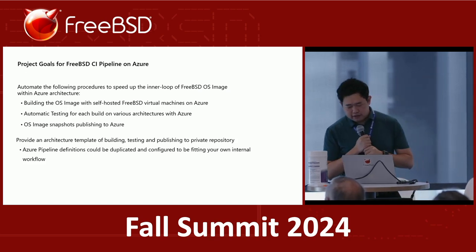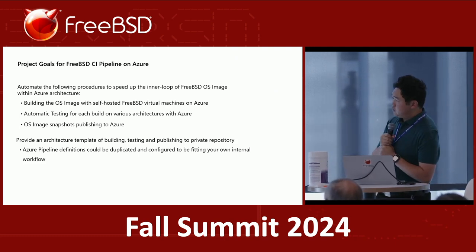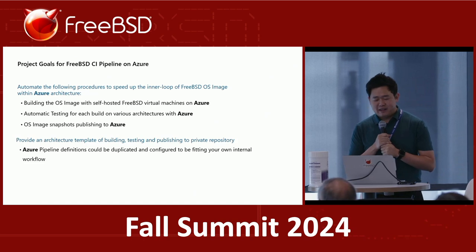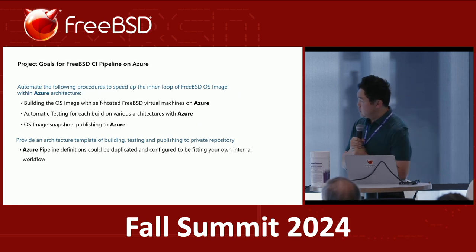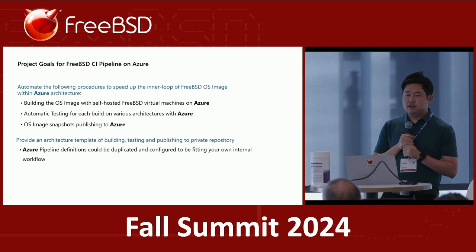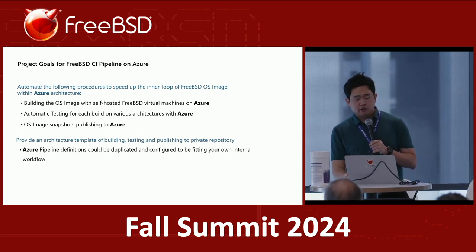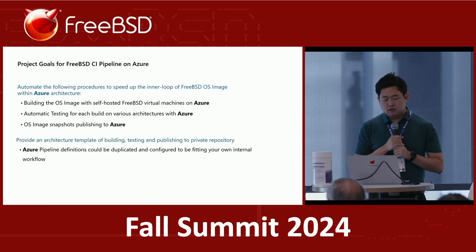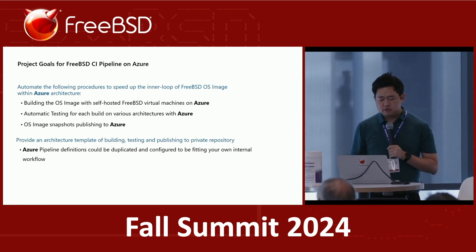You just modify a few settings — two or three — and you'll be able to set up an OS image CI pipeline in your Azure subscription without any extra effort. You don't have to set up a standalone CI server. Everything runs on Azure Cloud. This talk is focused on Azure, but it can apply to any cloud after you publish your image.